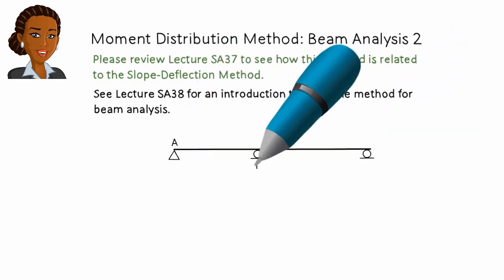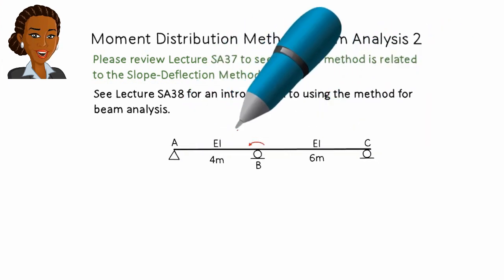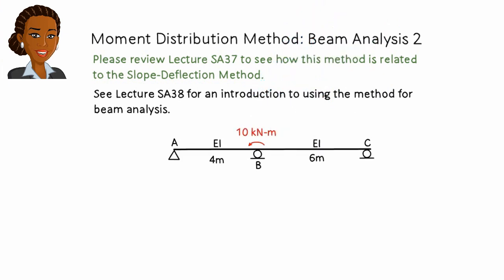Let's consider the continuous beam that we saw in the previous lectures, a beam with one pin and two roller supports. From lecture SA38, we know the distribution factors for the joints. They are...